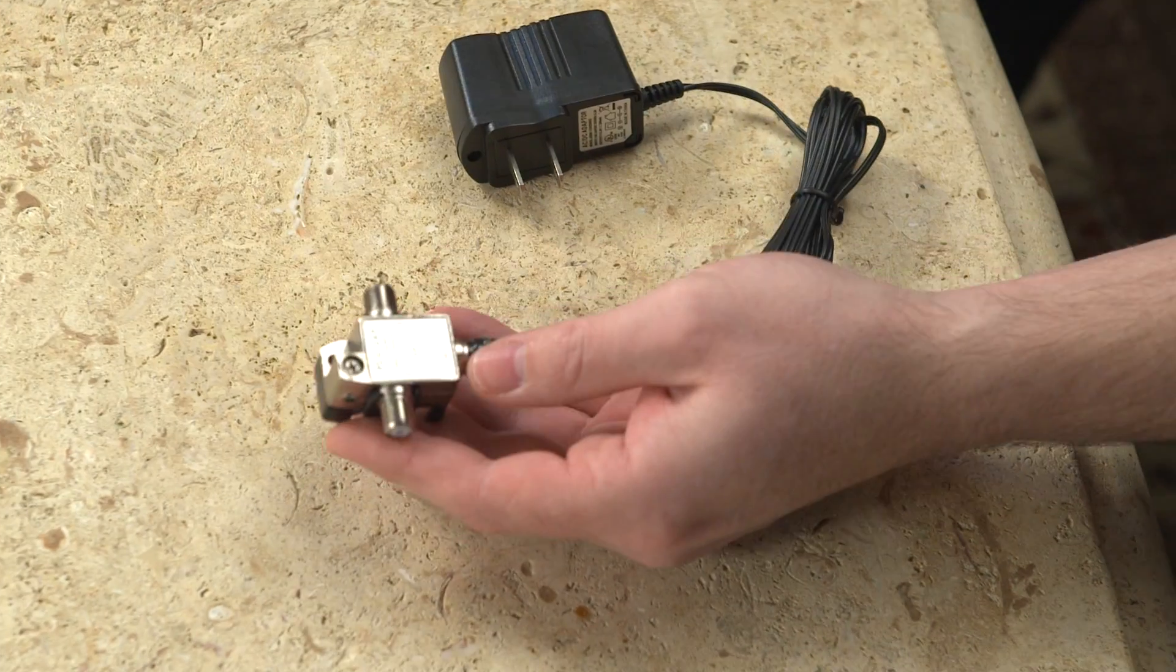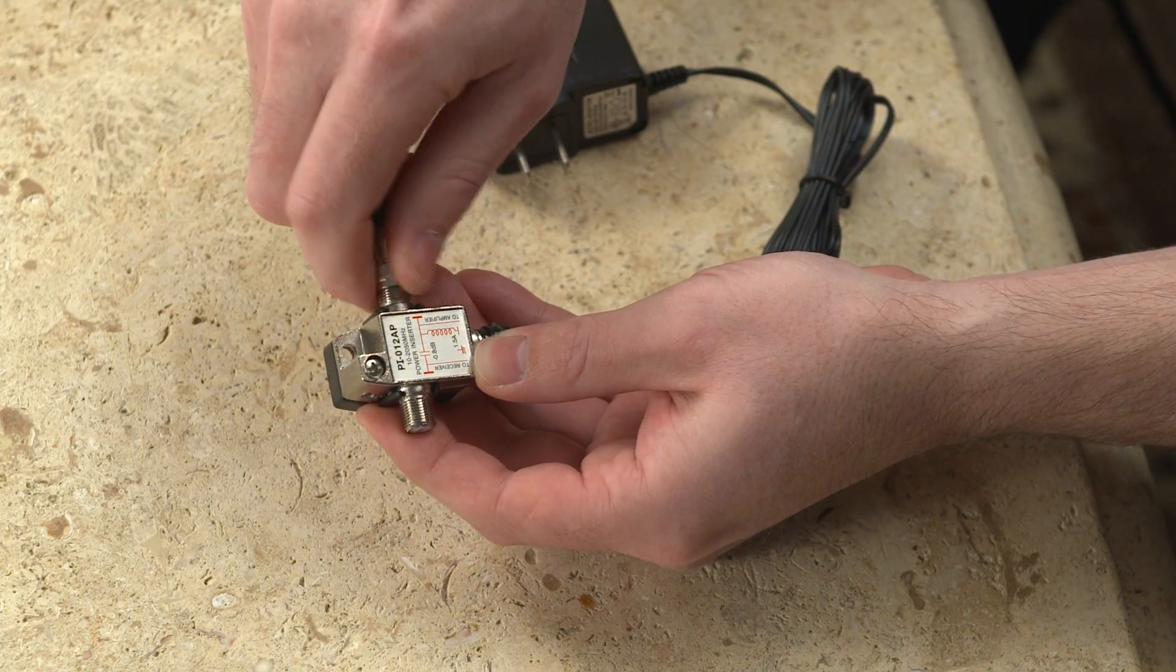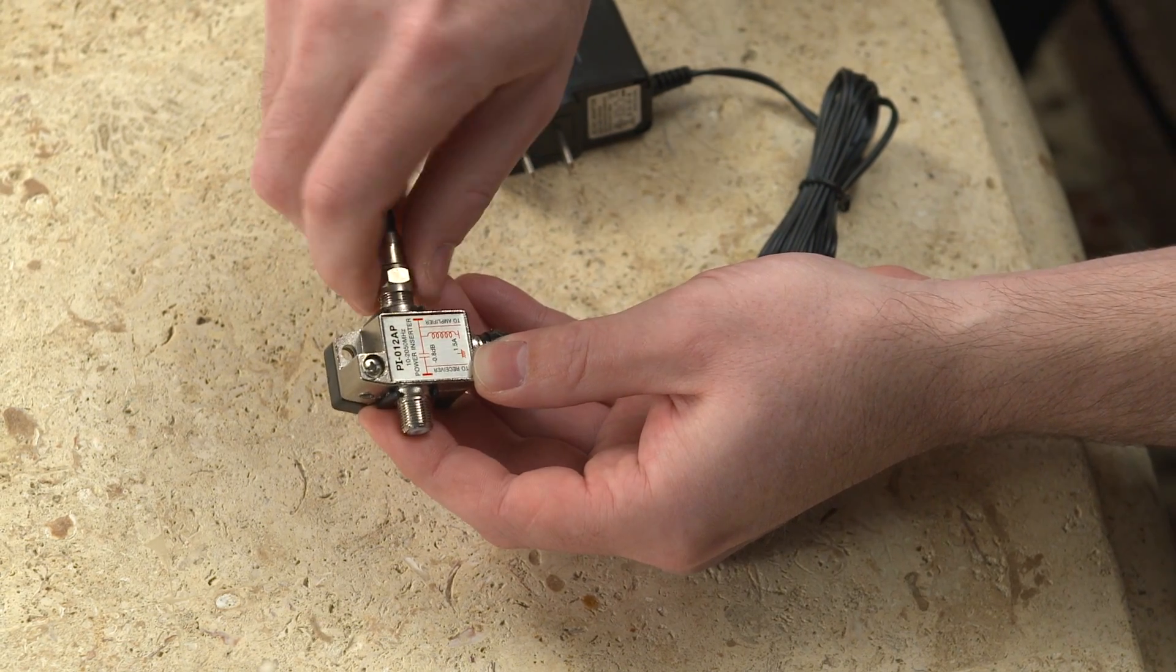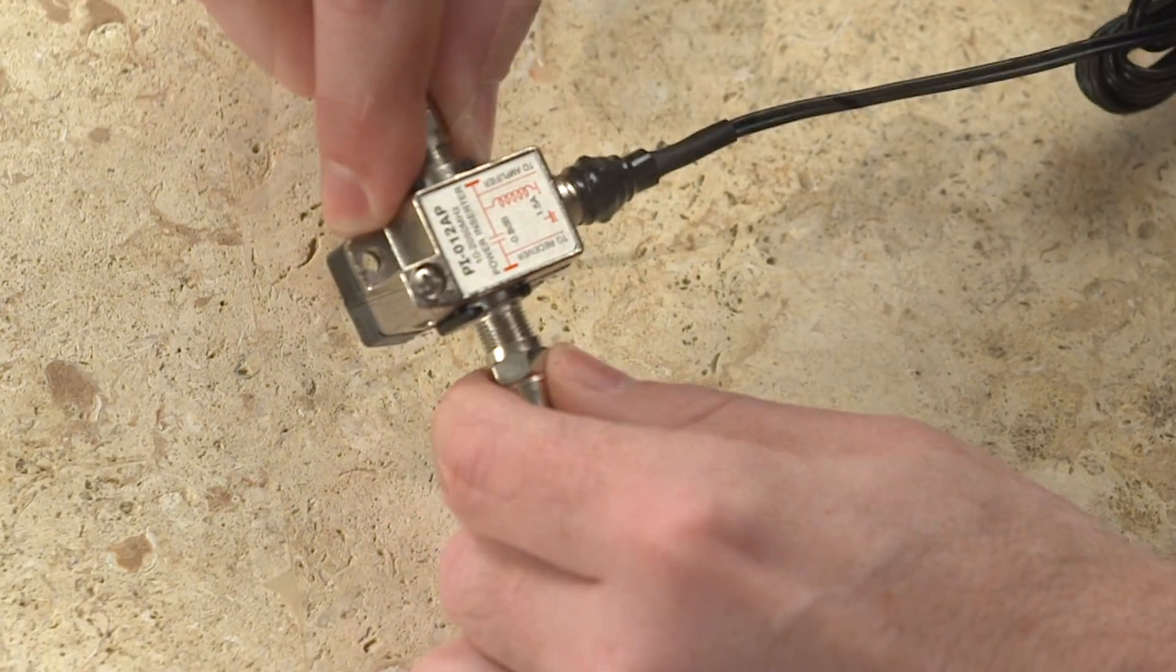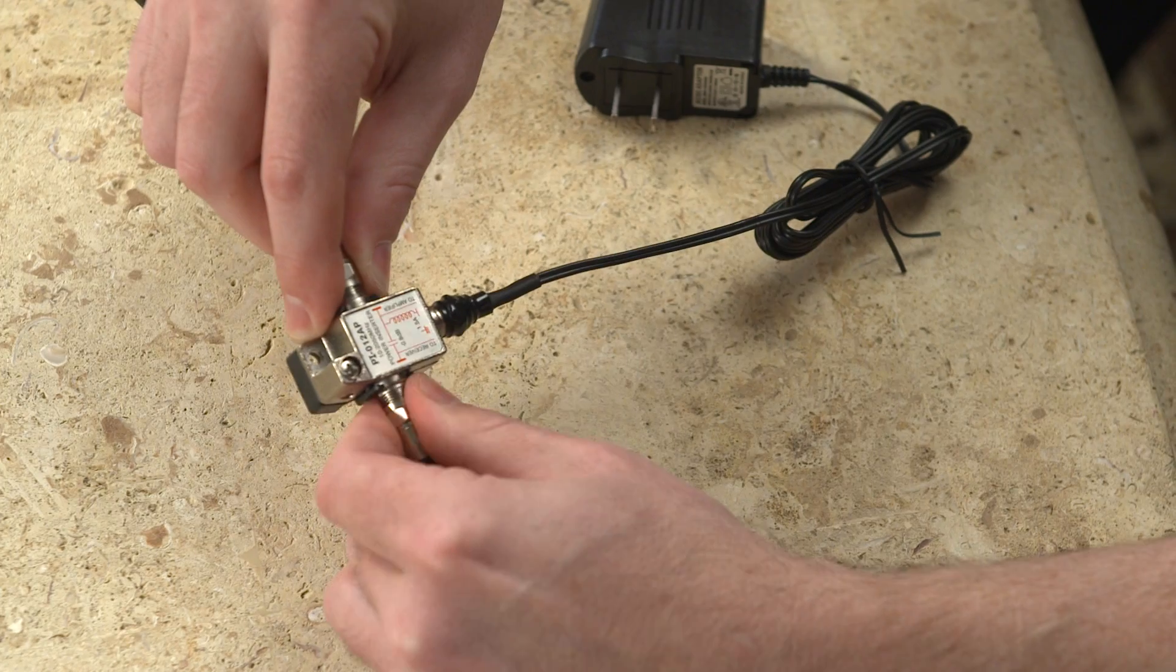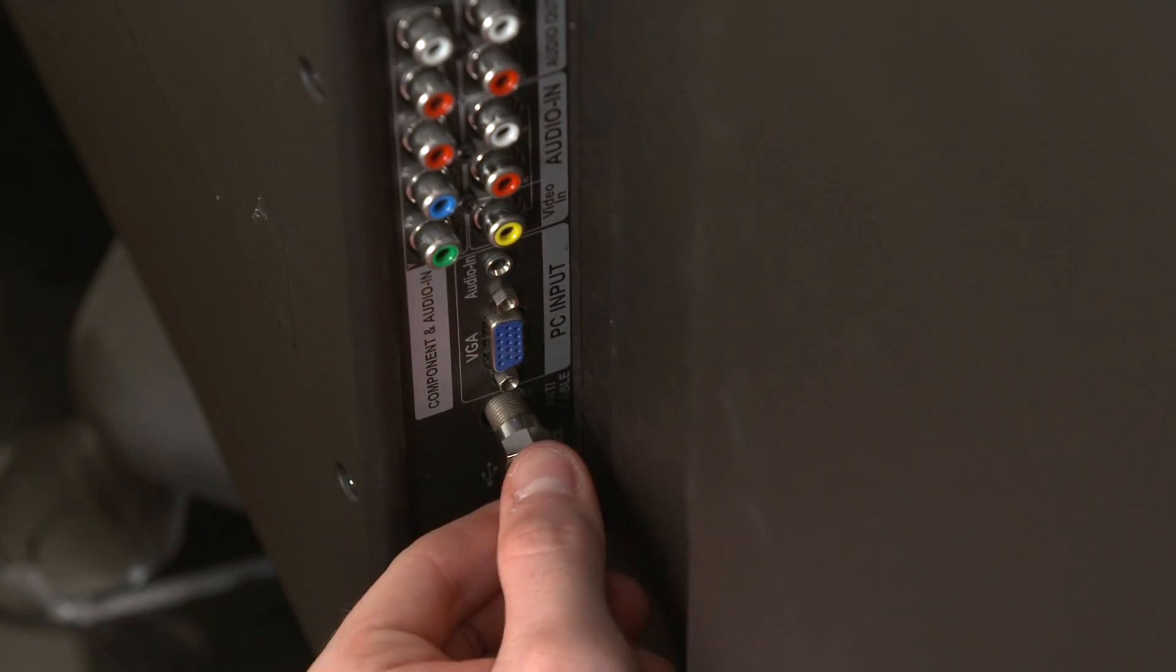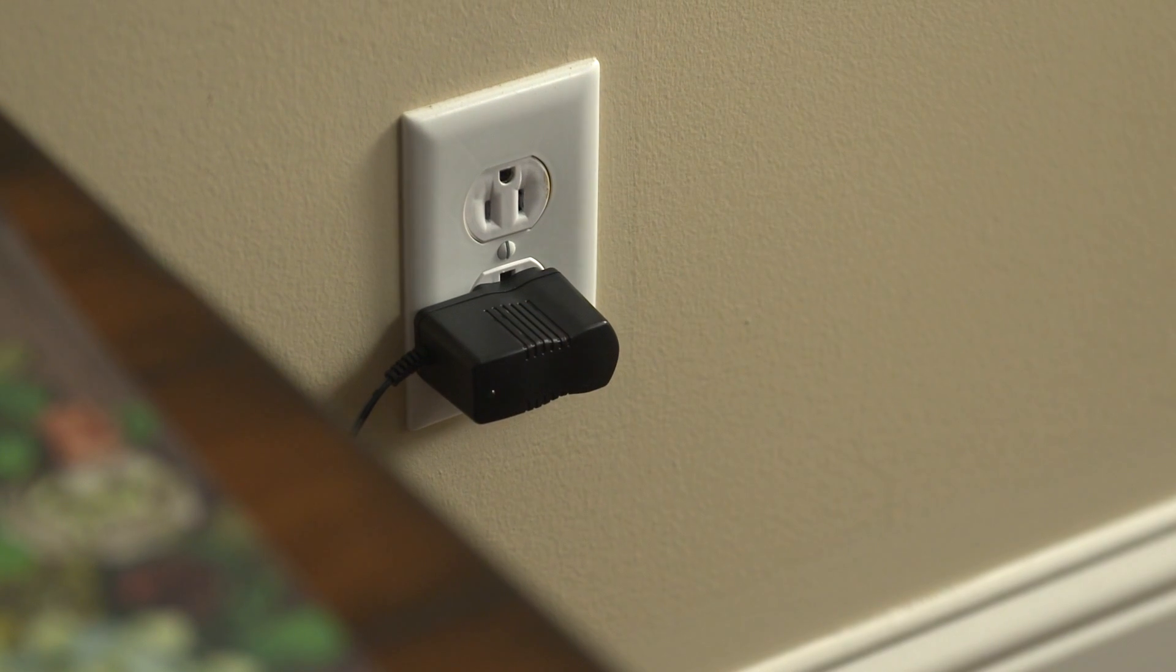Once you have the down-lead coaxial cable in a location near your television, connect the cable to the power inserter port labeled TO AMPLIFIER. Using the second provided 36-inch coaxial cable, connect one end to the power inserter port labeled TO RECEIVER or TV, and the other end into your television. Now plug the power inserter into a wall outlet.